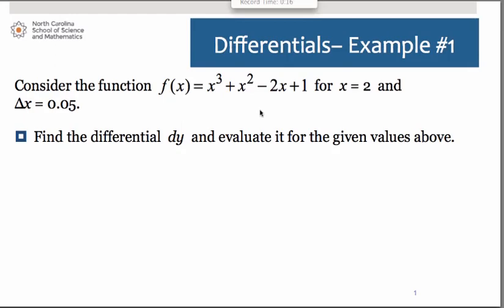We have here a cubic polynomial x cubed plus x squared minus 2x plus 1 and we're going to consider that function at the x value of 2 and a delta x of 0.05. Think of the 0.05 as almost that delta neighborhood. It's similar to what we talked about when we did the formal definition of a limit.